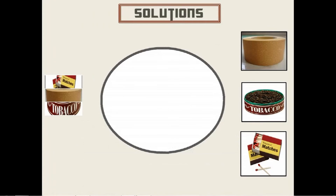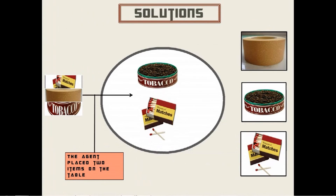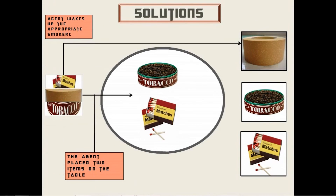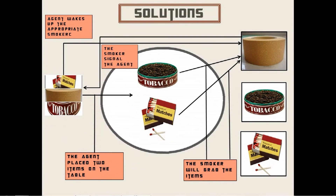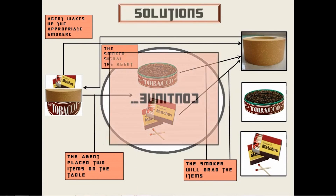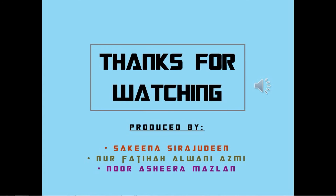Here is the demonstration for the deadlock solution. The agent places two items at random on the table — for example, tobacco and matches — then finds the complement for both ingredients and wakes up the appropriate smoker, in this case the paper smoker. Paper will take both items and make the cigarette. After making the cigarette, it signals the agent, and the agent continues with tobacco and matches or can do the same with paper. I hope you understand the cigarette smokers problem and the solution. Thanks for watching.